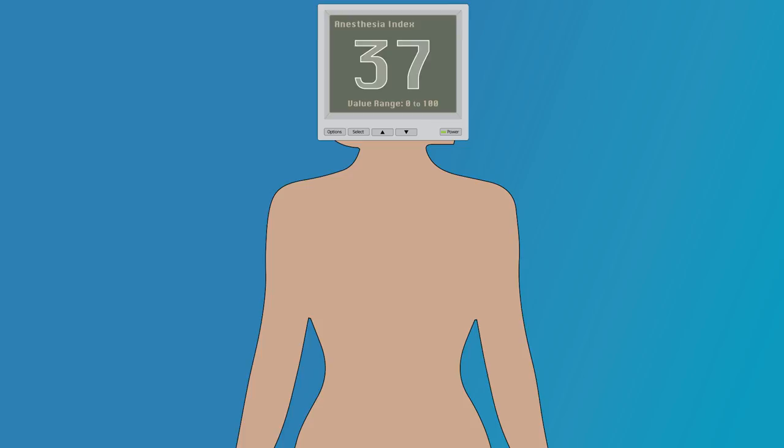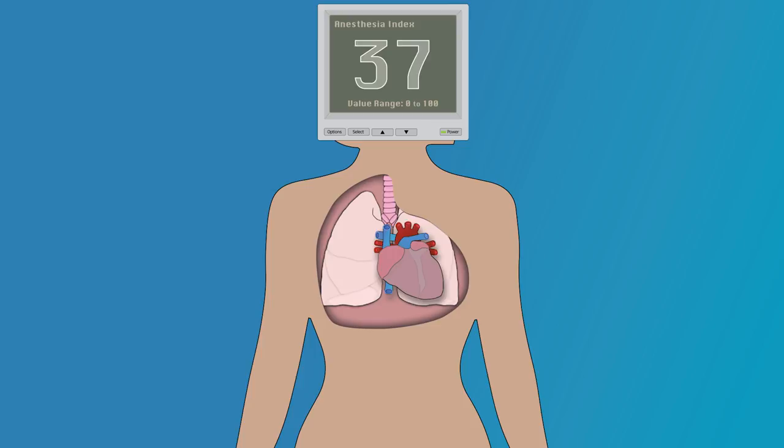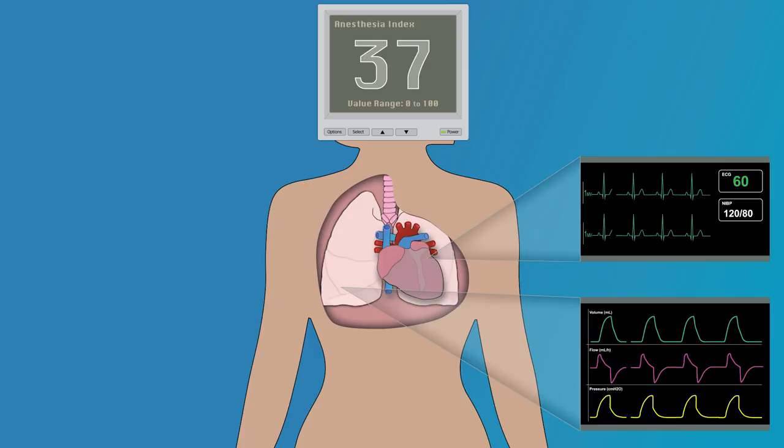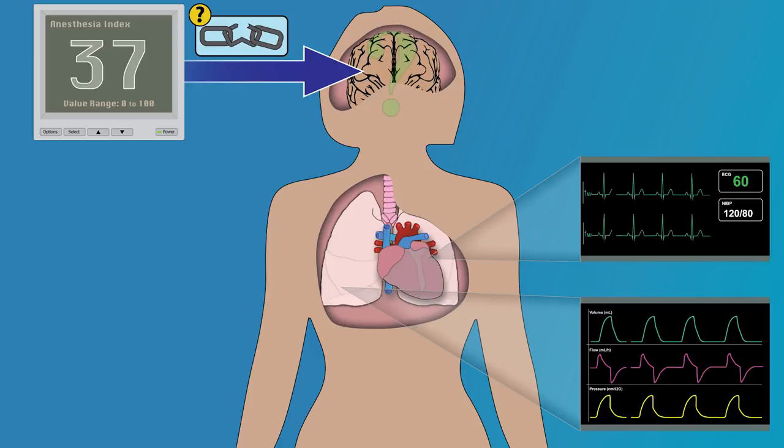As a result, the indices tended to go against the fundamental approach taken when monitoring most other physiological signals. For other physiological monitors, we typically have an understanding of the linkage between the signal and underlying physiology. The anesthesia indices were developed in a time where we were still trying to establish this linkage between the EEG signal and the anesthetic action on the brain.